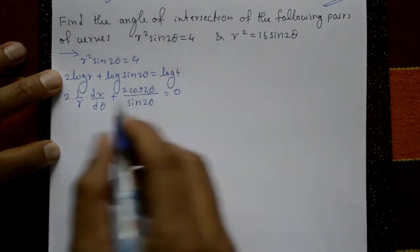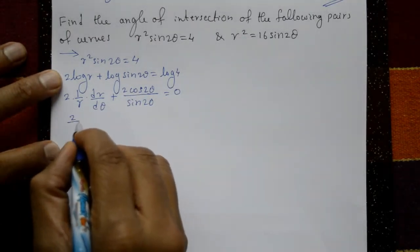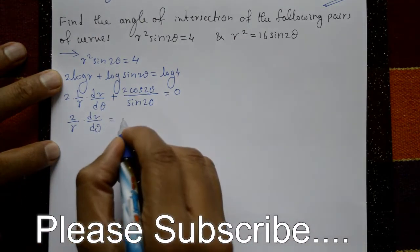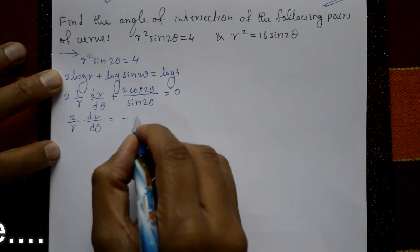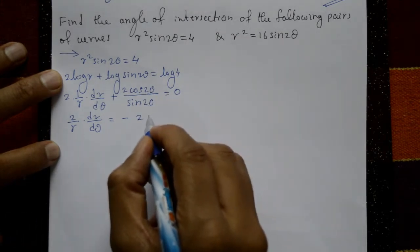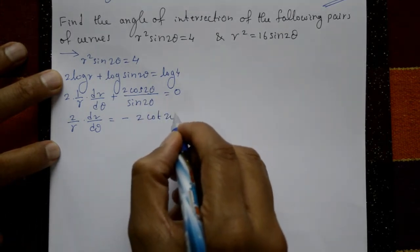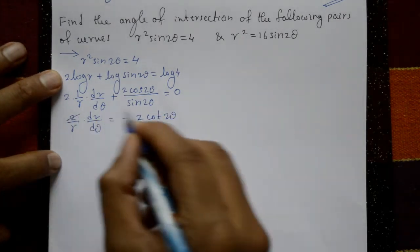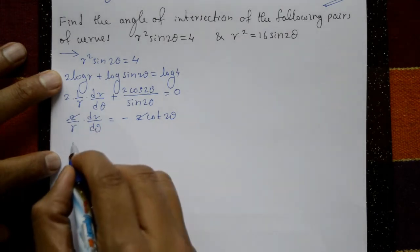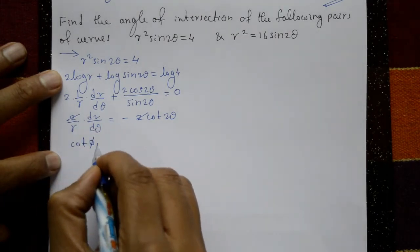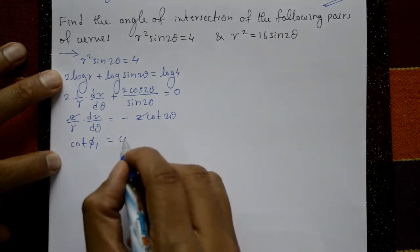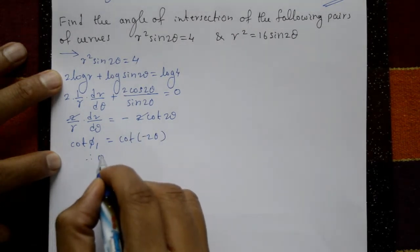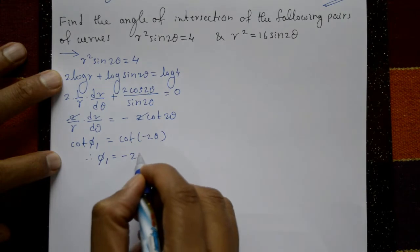Shifting the remaining term to the right-hand side: (2/R)·(dR/dθ) = −2cos2θ/sin2θ = −cot2θ. The 2's cancel, giving cotφ₁ = cot(−2θ). Therefore φ₁ = −2θ.